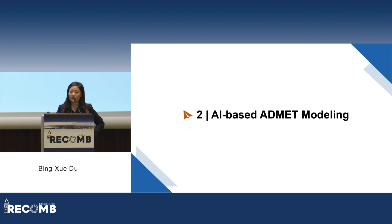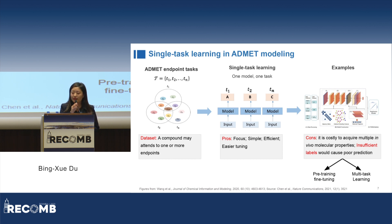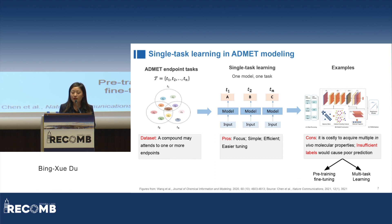Let's go to the second part: AI-based ADMET modeling. In order to model the ADMET endpoint data and predict their properties, researchers have traditionally relied on single-task learning methods. In single-task learning, a separate model is developed for each specific task, such as predicting HIA, half-life, or clearance. This one model, one task paradigm focuses on specific tasks and makes the prediction simple and efficient, and it is easier for tuning. However, it is costly to acquire multiple in vivo molecular properties and insufficient labels would cause poor prediction. To alleviate these problems, pre-training, fine-tuning, and multi-task learning are utilized to improve the predictions. They all belong to transfer learning.